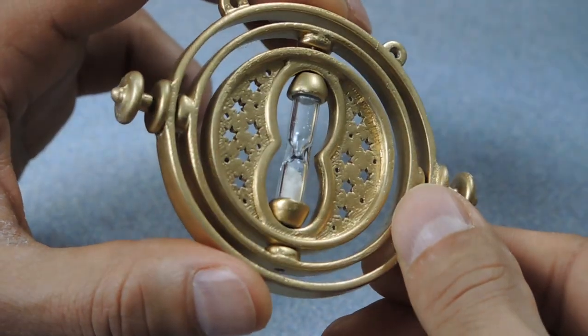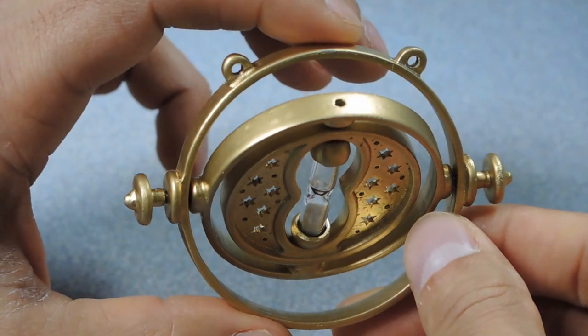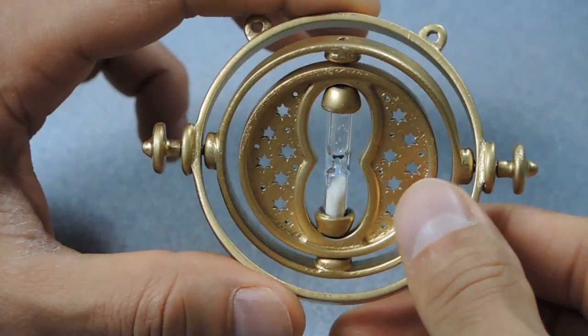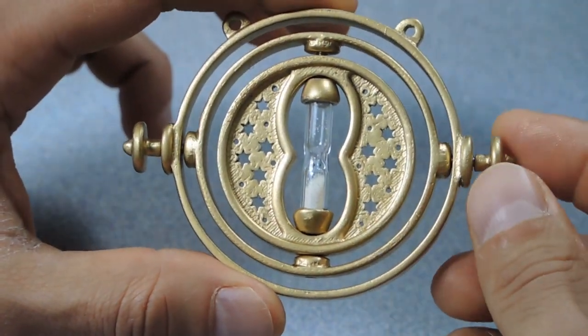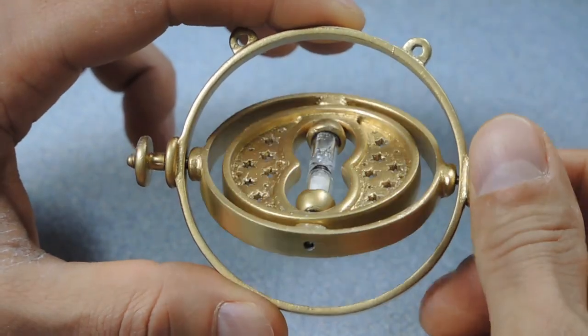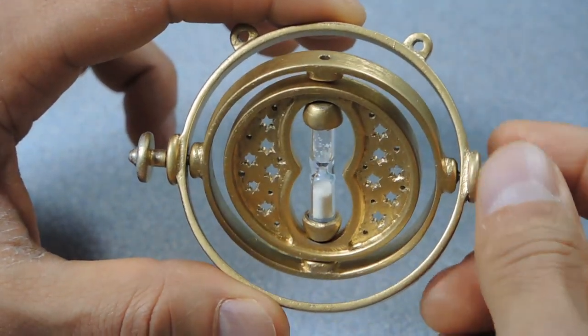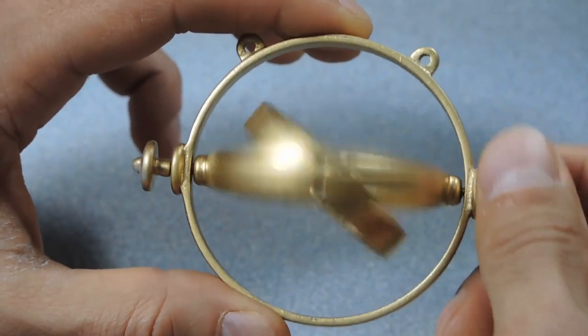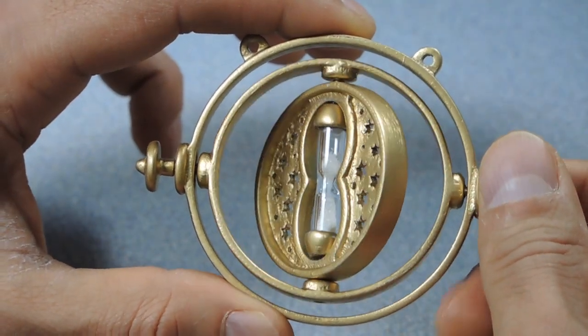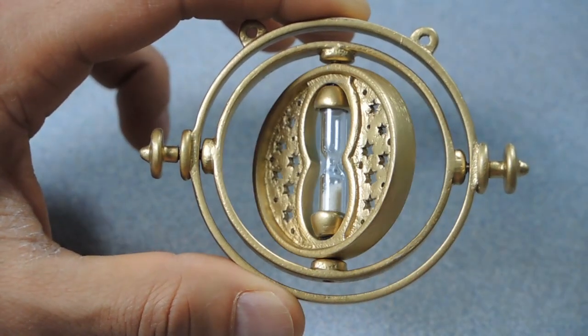And here you can see we have the finished product. You can see that the hourglass does function, the sand flows through, and you can spin the Time Turner with the outer knobs. And the inner disc also spins nice and freely.